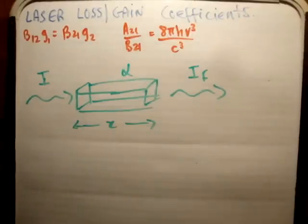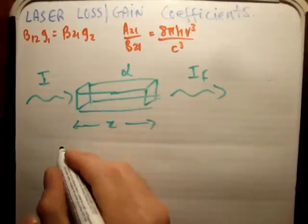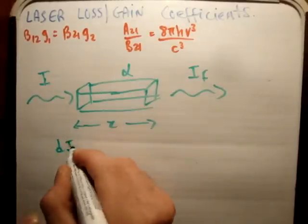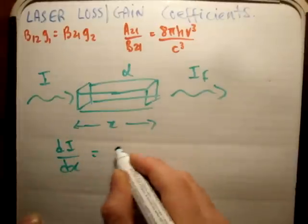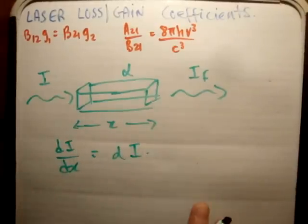You can see that this depends on the rate of change of the irradiance with respect to position. So we can say that dI/dx is equal to alpha times I. That's something we've seen in the past.